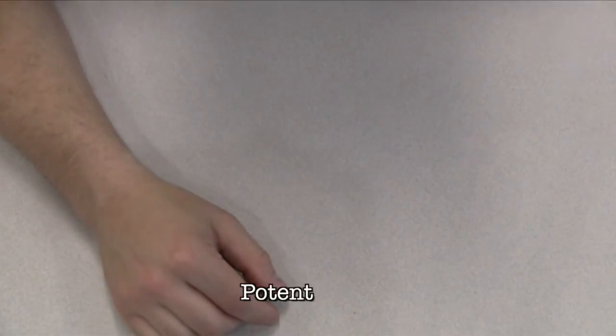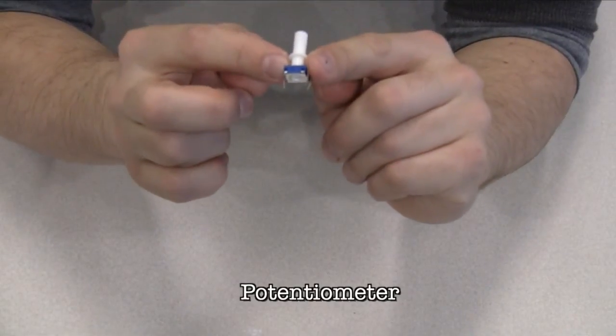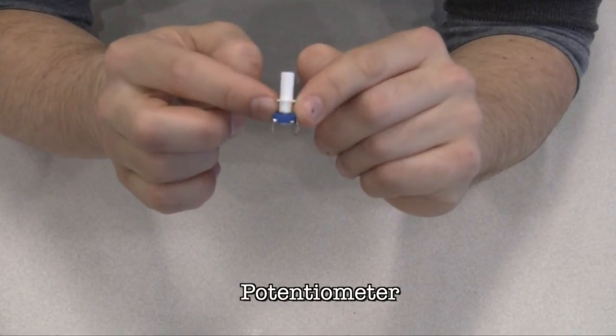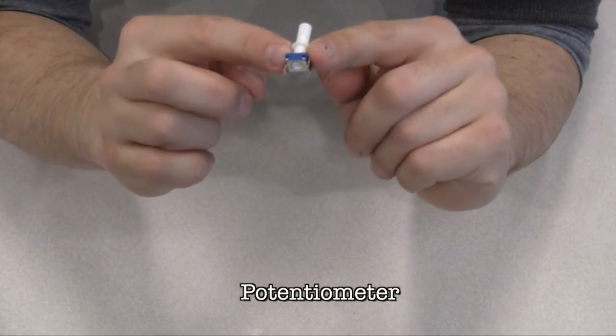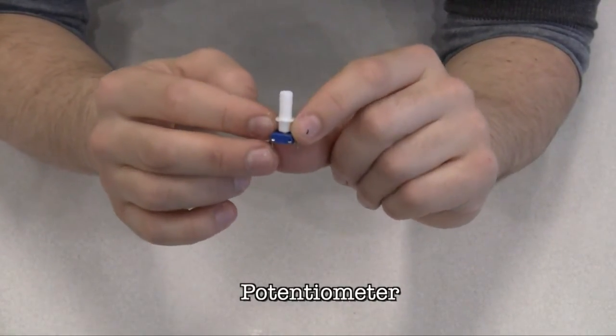A potentiometer is a variable resistor with three pins. Two of the pins are connected to the ends of a fixed resistor. The middle pin, or wiper, moves across the resistor, dividing it into two halves. When the external sides of the potentiometer are connected to voltage and ground, the middle leg will give the difference in voltage as you turn the knob.